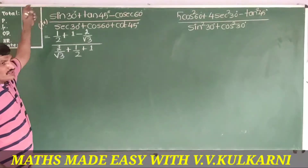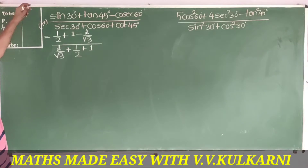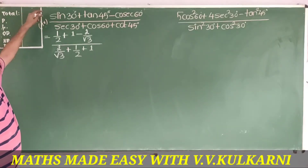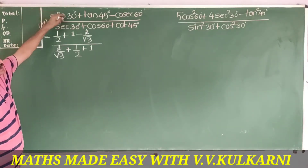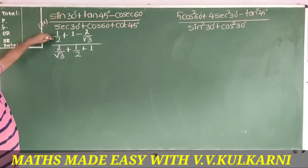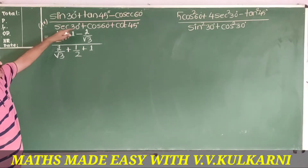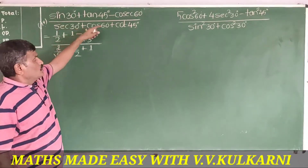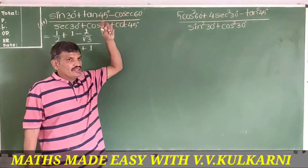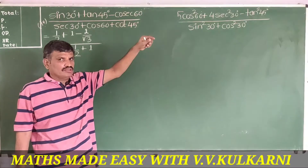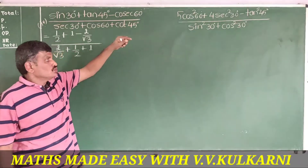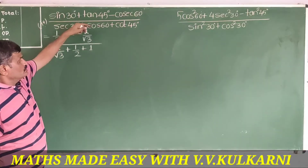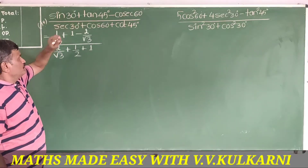What I have done is put the correct trigonometric angles: sin30 is 1/2, tan45 is 1, cosec60 — since sin60 is √3/2, cosec60 is 2/√3.